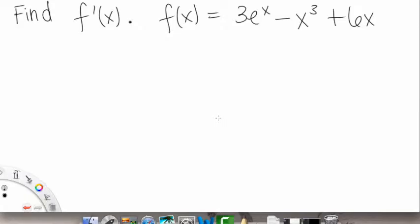Okay, so for this problem we're going to find f prime of x, where our function, our f of x, is equal to 3e to the x minus x cubed plus 6x. Okay, so let's start breaking it down.